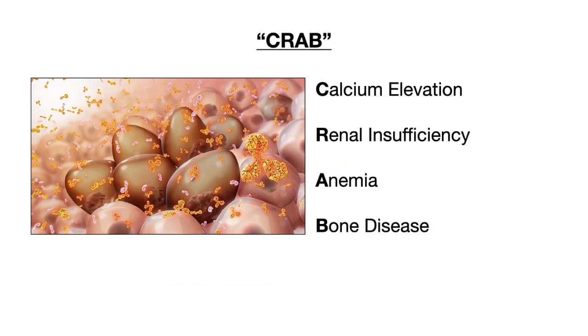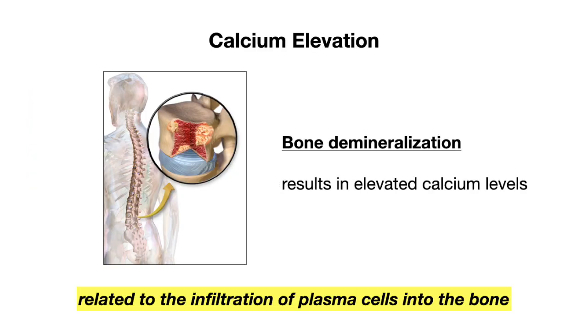Let's now discuss the key features of multiple myeloma, summarized in the acronym CRAB, which stands for calcium elevation, renal insufficiency, anemia, and bone disease.